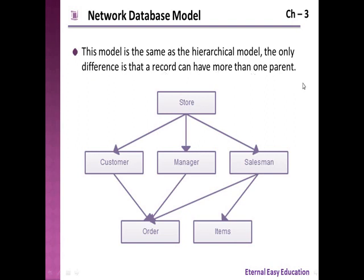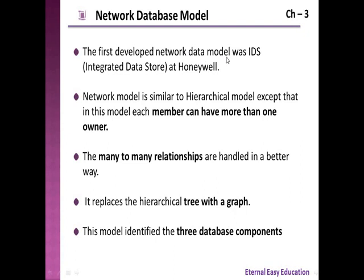The disadvantage of the hierarchical model has become an advantage here. In the network database model, one parent can have many linked records. For example, the store is linked with the customer, manager, and salesman; the customer manager is also linked with the order, and the salesman is also linked with the order. The first developed network data model was IDS — Integrated Data Store. The network model is similar to the hierarchical model except that each member can have more than one owner, and many-to-many relationships are handled in a better way. It replaces the hierarchical tree with a graph.